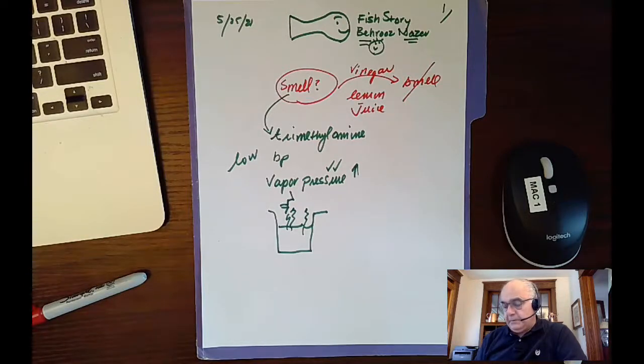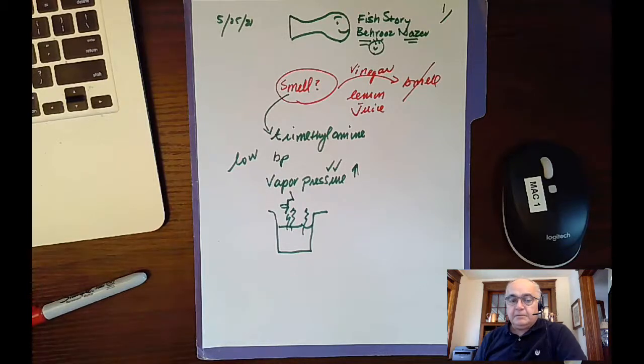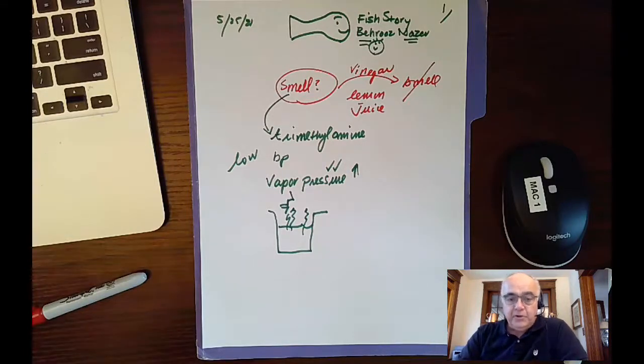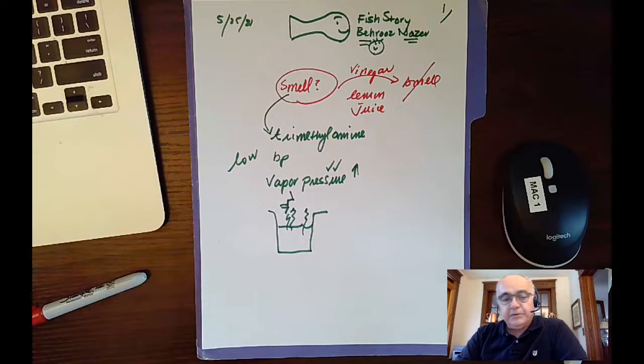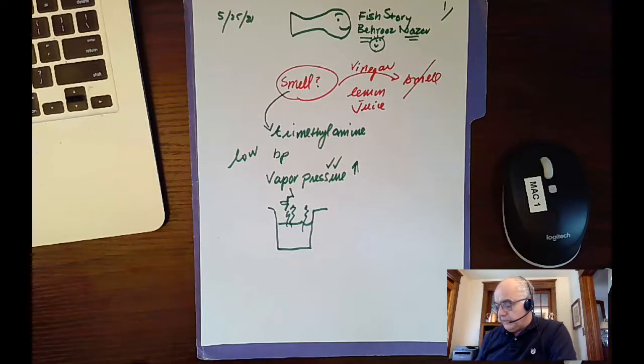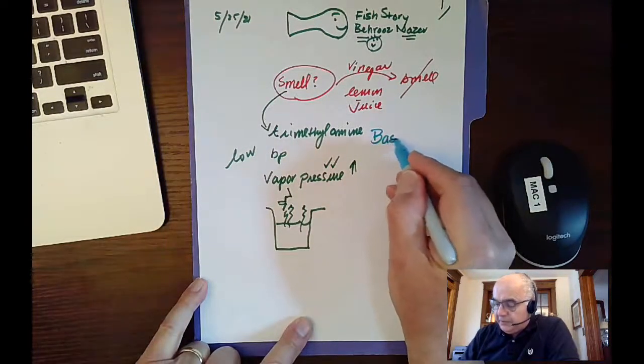We need to ask ourselves: What happened to this trimethylamine? First of all, how did the fish make it? It has high vapor pressure or low boiling point, so what does vinegar or lemon juice do to this trimethylamine? Later on we're going to learn that trimethylamine is a base. The trimethylamine functional group is a base. Vinegar or lemon juice are acid.